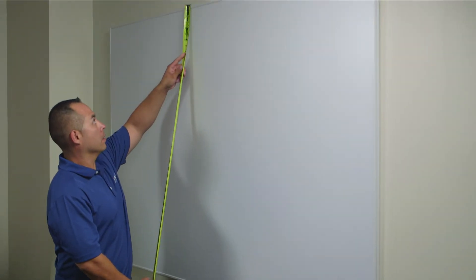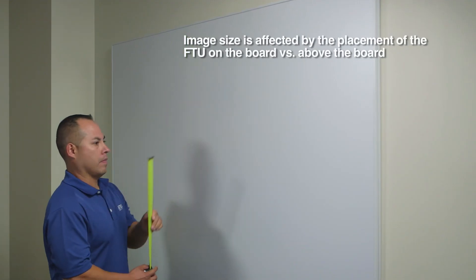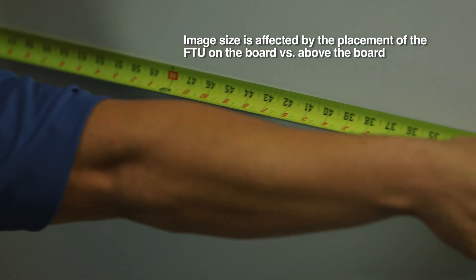Now we need to measure the height and width of the board to determine the diagonal image size it can support. Native image is 16:10 aspect ratio.